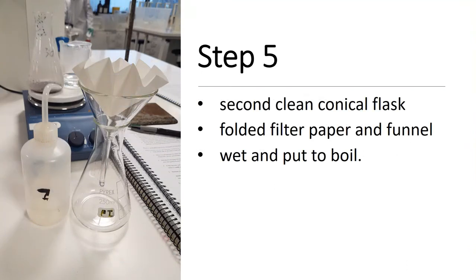Whilst the charcoal and benzoic acid solution is on the hot plate, prepare the fluted filter paper and funnel to be placed in a second clean conical flask. Wet the filter paper, making sure that there is 1–2ml of water on the bottom of the clean conical flask. Add the clean conical flask and funnel paper arrangement to the hot plate.